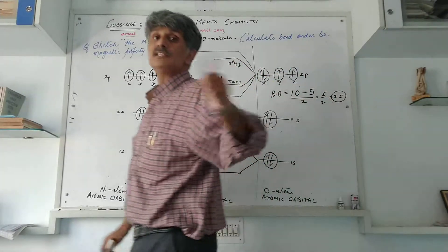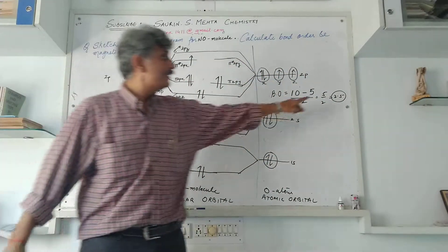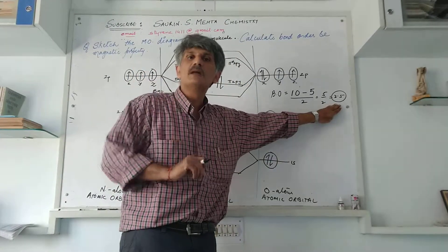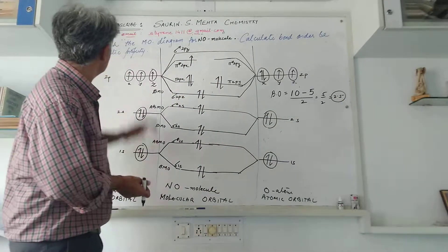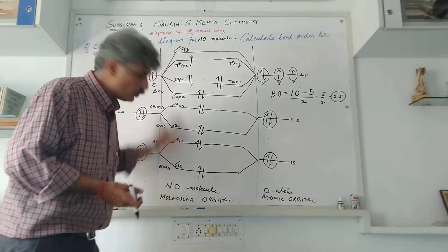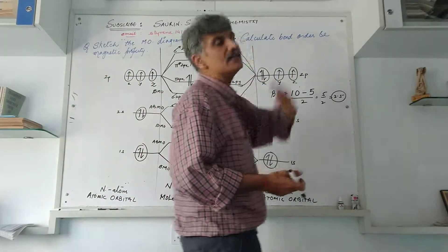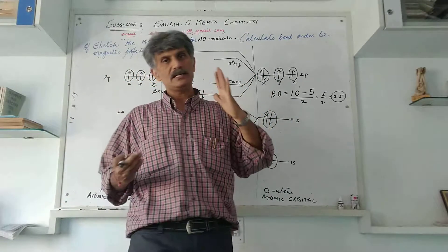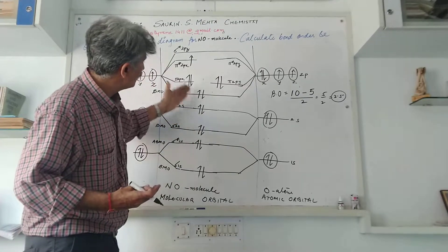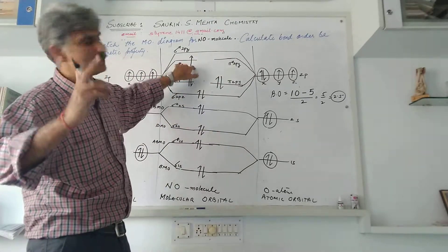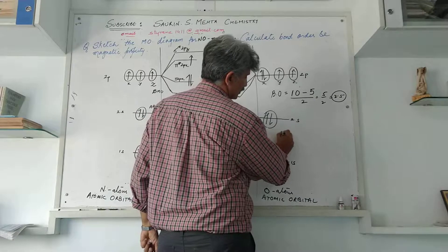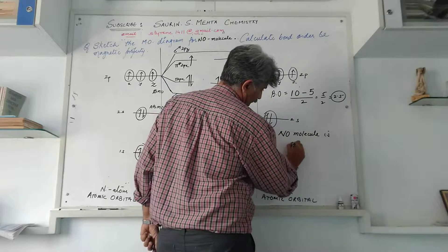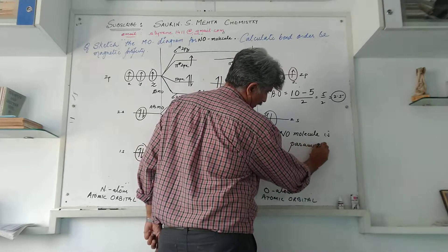One more thing is regarding its magnetic property. You know if it is having even a single electron unpaired, it is paramagnetic. And if all the electrons are paired, it is diamagnetic. Let's see over here, most are paired but you can see there is one electron which is unpaired. And so I would say that nitric oxide NO molecule is paramagnetic in nature.